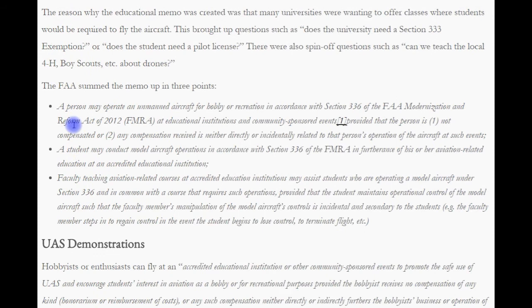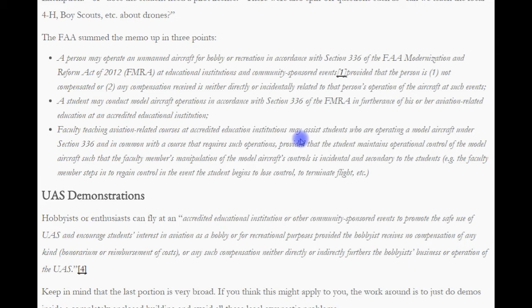A person may operate an unmanned aircraft for hobby or recreation in accordance with Section 336 of the FAA Modernization Reform Act of 2012 at an educational institution or community-sponsored event, provided that the person is not compensated, or any compensation received is neither directly nor incidentally related to the person's operation of the aircraft. A student may conduct model aircraft operations in accordance with Section 336 of the FMRA in furtherance of aviation-related education at an accredited educational institution. Faculty teaching aviation-related courses at accredited institutions may assist students operating a model aircraft, provided that the student maintains operational control.